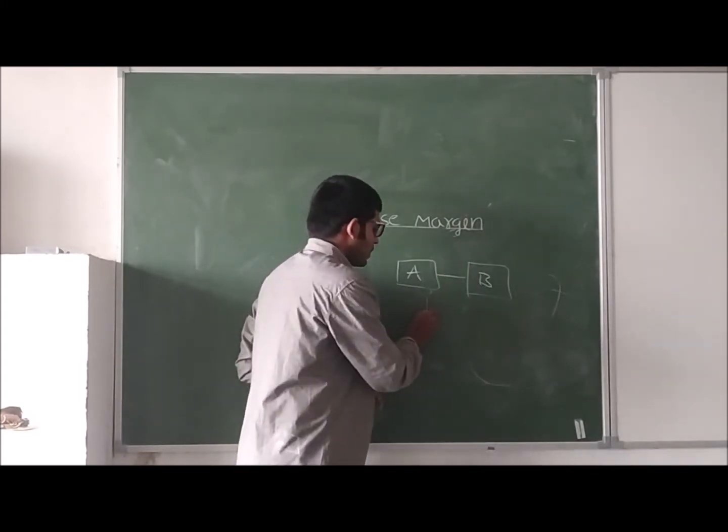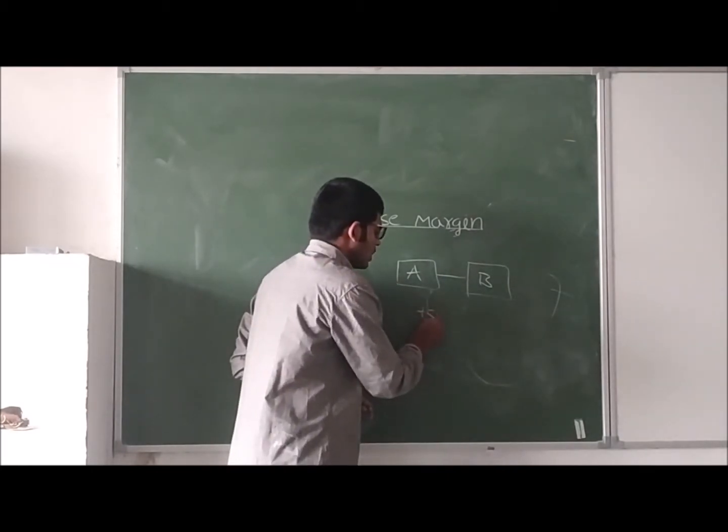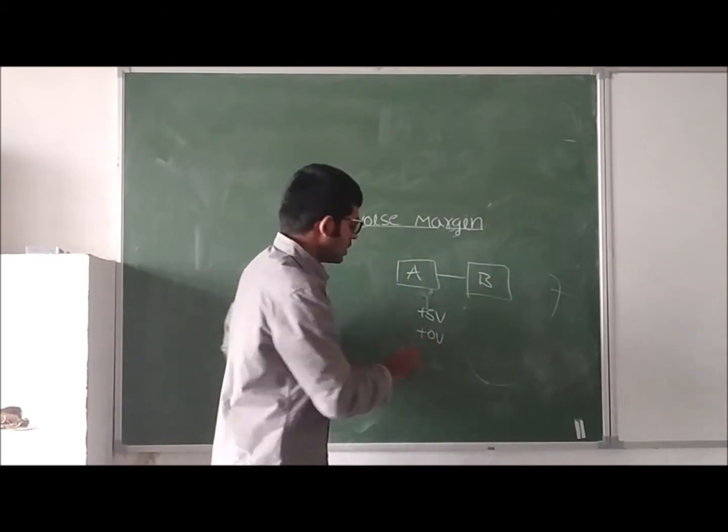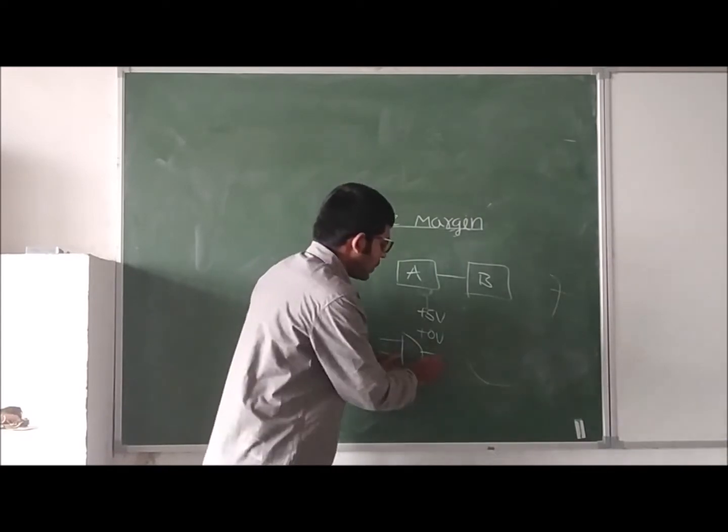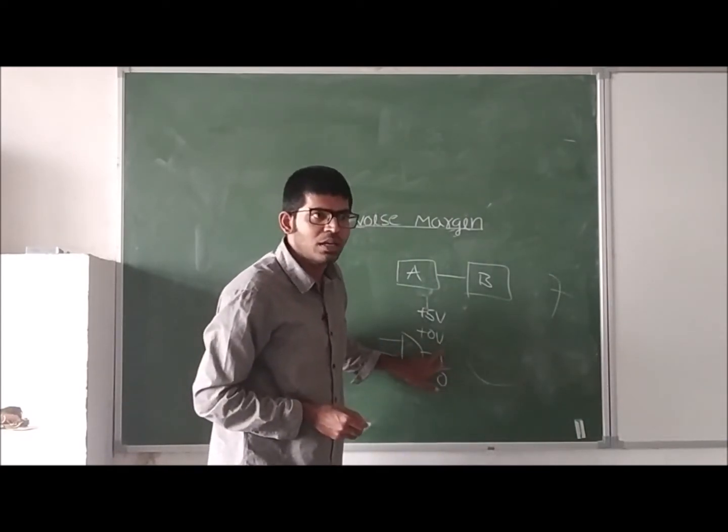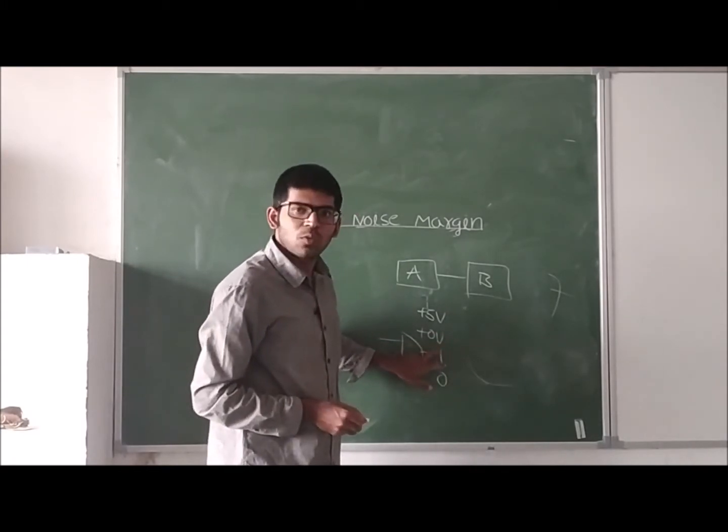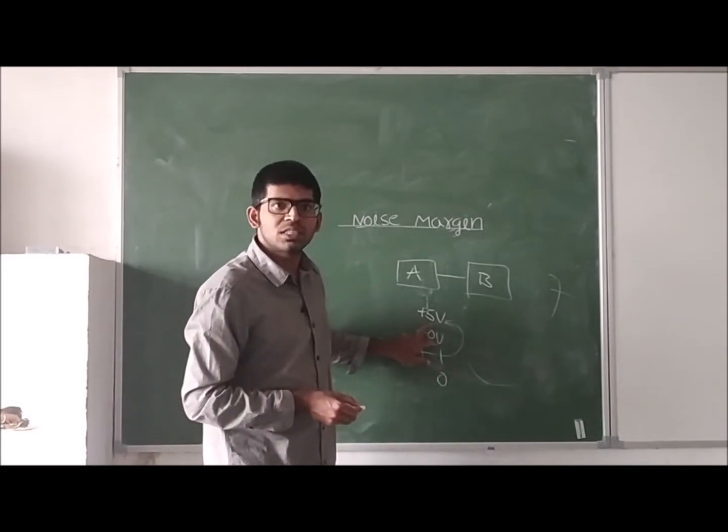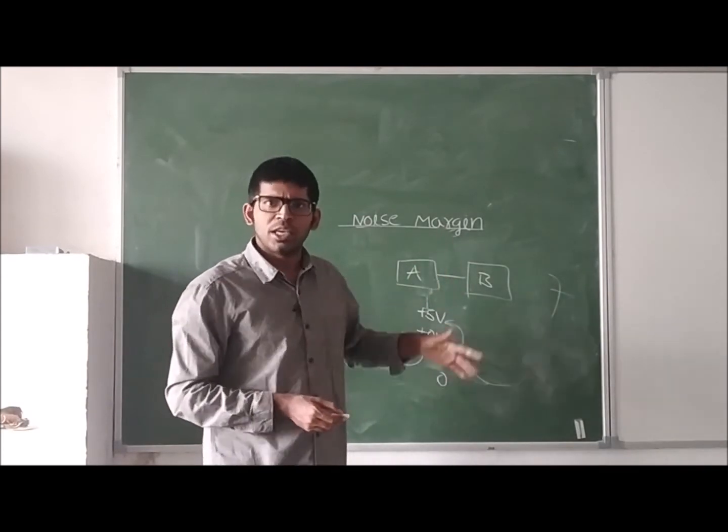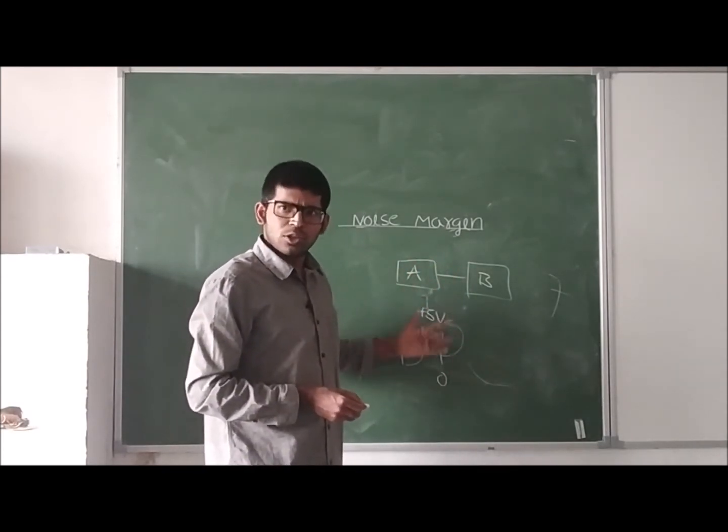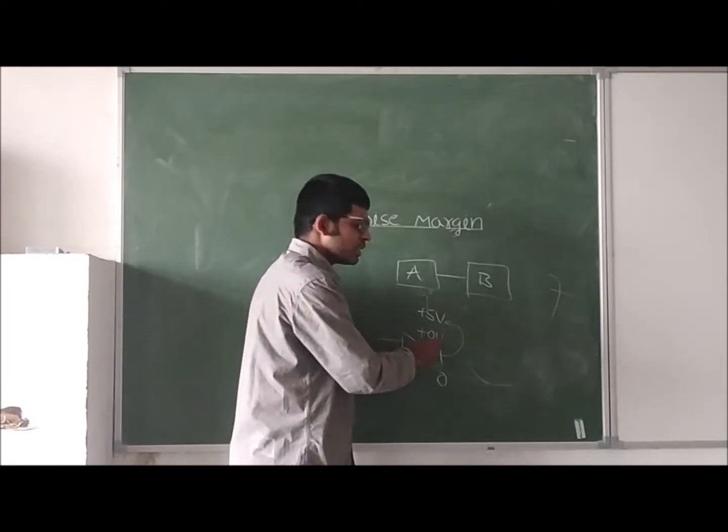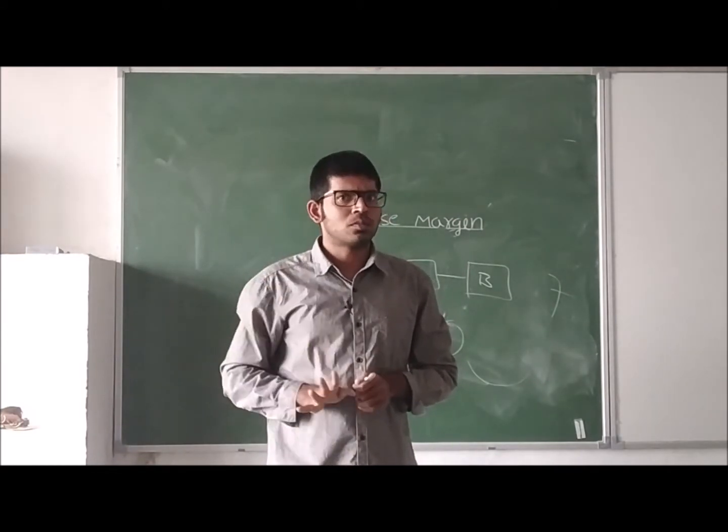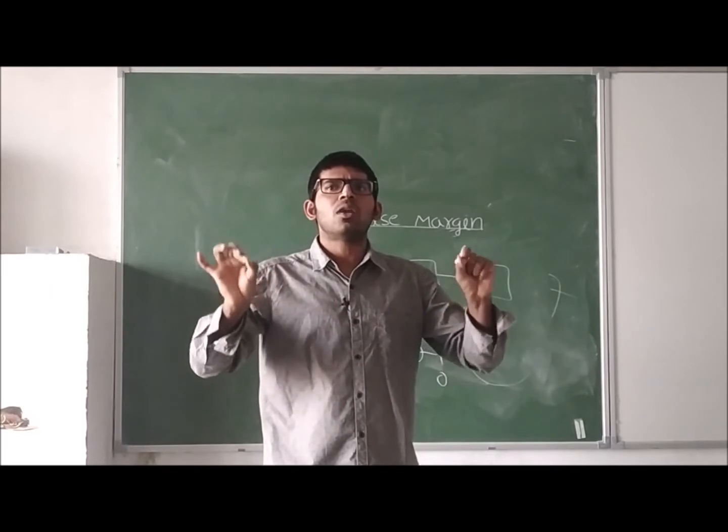Now suppose we are saying output voltage is plus 5 volts or 0 volts. For example, if this is an AND gate, output can be either 1 or 0. If the output is logic 1, then the voltage is plus 5 volts. If the output is logic 0, then the voltage is 0 volts. At any moment, even if I check it at 1 o'clock, 2 o'clock, 3 o'clock, at any moment if I check, the output of this gate should be either plus 5 volts or 0 volts, means either high or low. But this does not happen always in the same way.